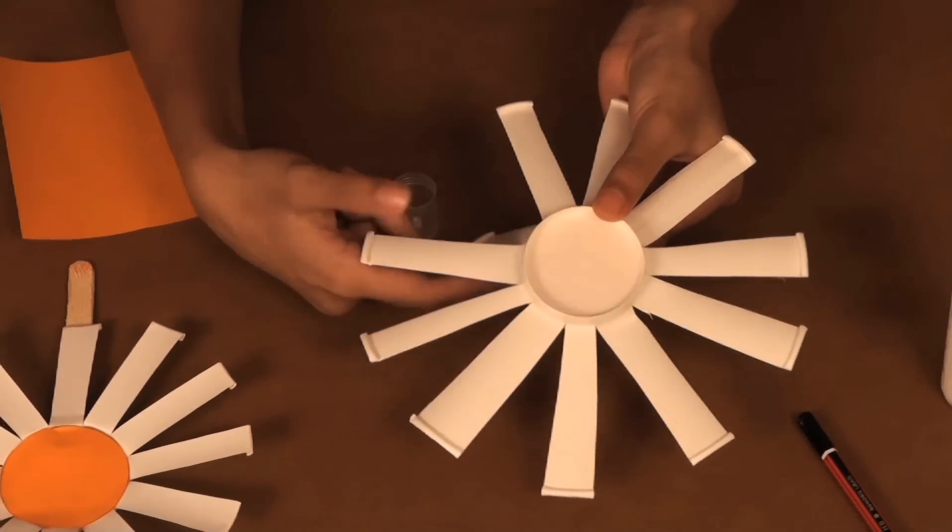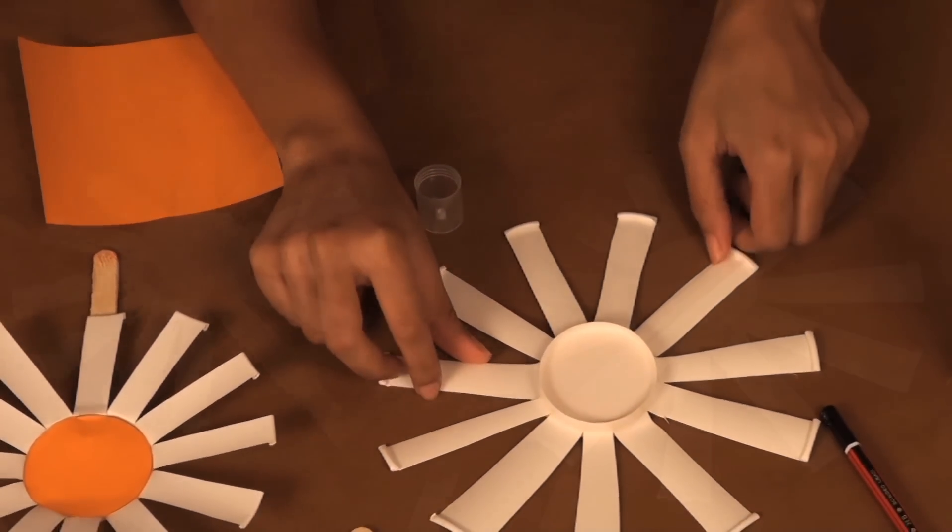Now, turn the flower over and make two slits at the protruding base of the cup.